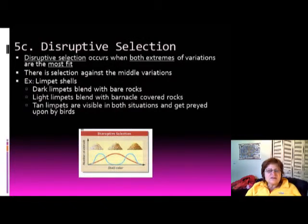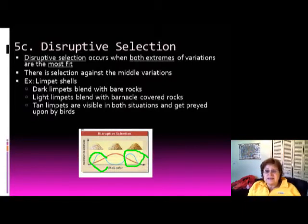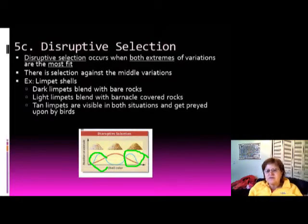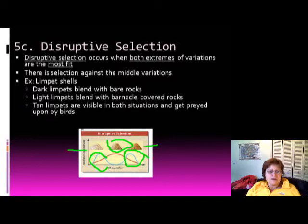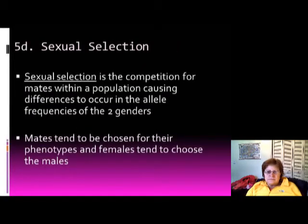Disruptive selection occurs when both extremes are the most fit for the environment, and intermediate forms are selected against. For example, a clam that matches the color of sand or common rocks on the beach survives, while the most average-colored ones are easily spotted and eaten, so both extremes are favored.